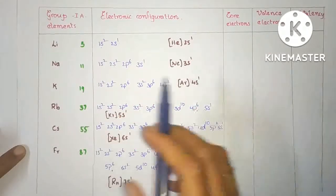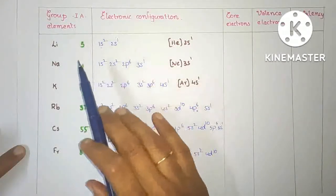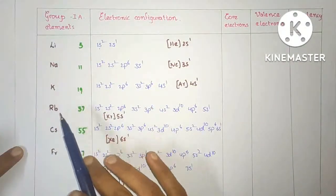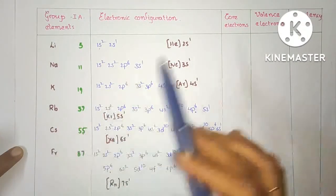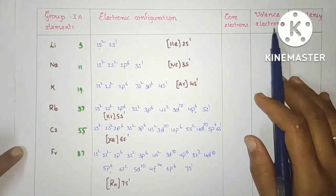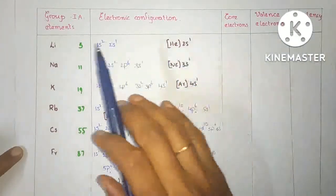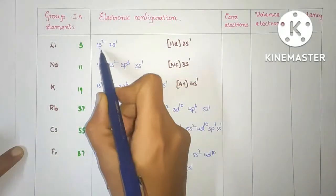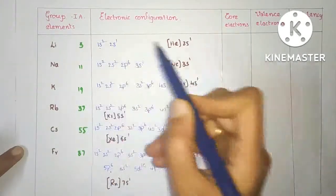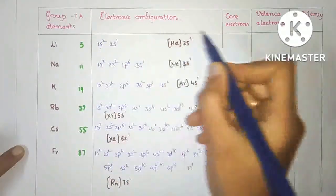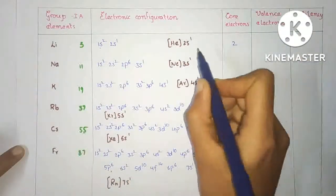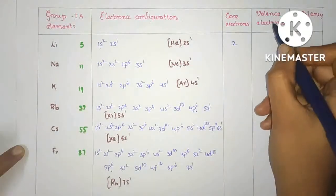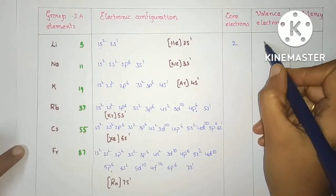Now let us consider elements of the same group. For group 1A: lithium, sodium, potassium, rubidium, cesium, and francium. We can calculate core electrons, valence electrons, and valency. For lithium, atomic number is 3. The first shell is the innermost shell. The number of core electrons is 2, which is the inert gas configuration electrons, and the valence electrons are 1.